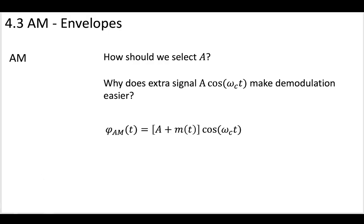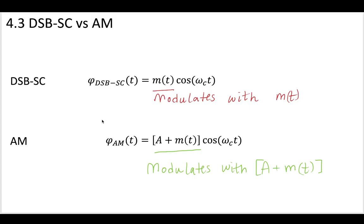Therefore, we said that we should make a little bit of a change. We said we should add some extra amount of A to our message in order to perform what we're going to call classic amplitude modulation.